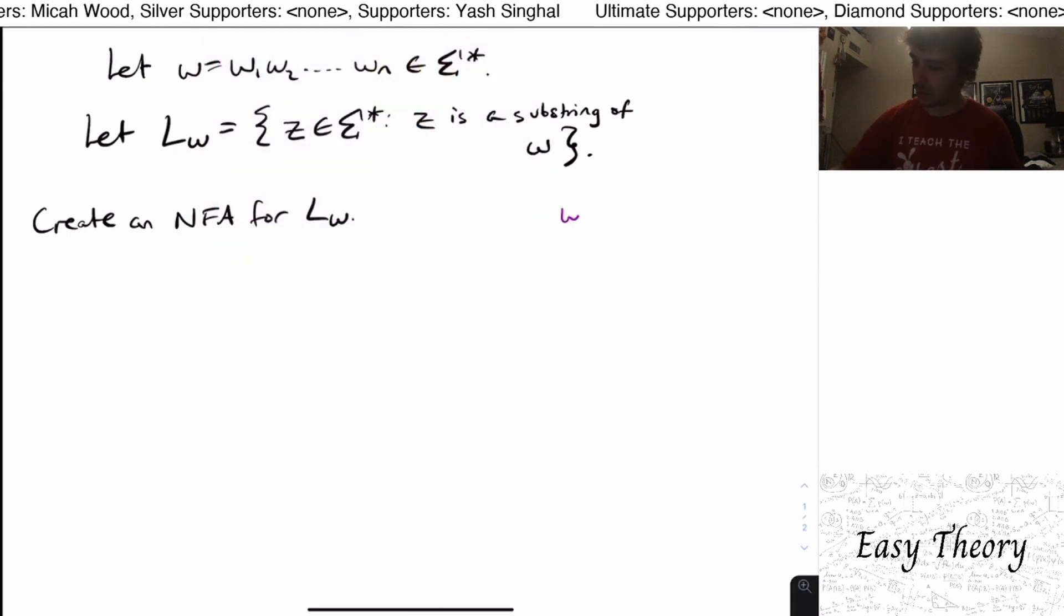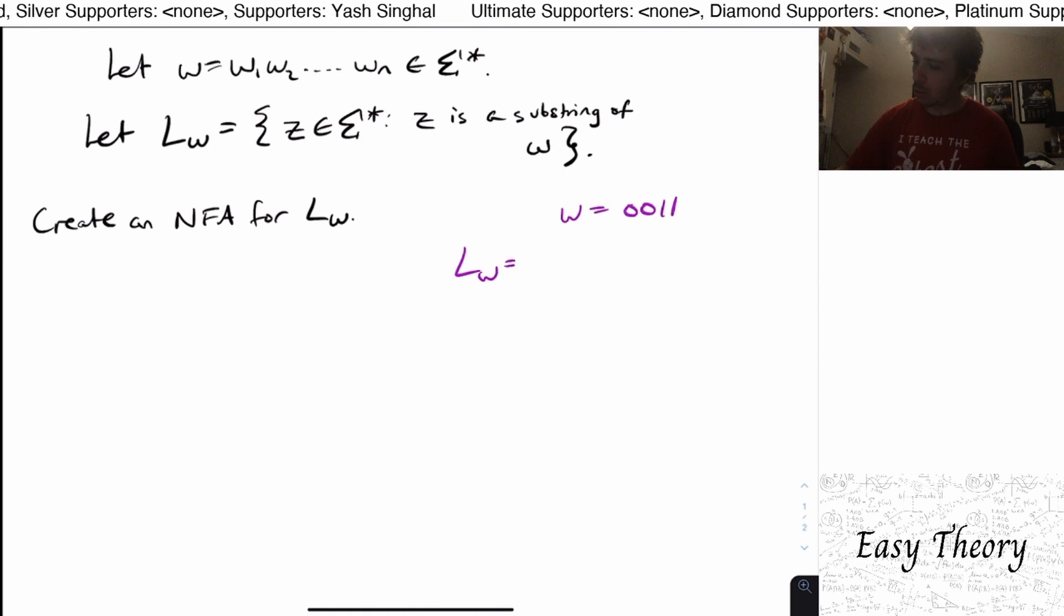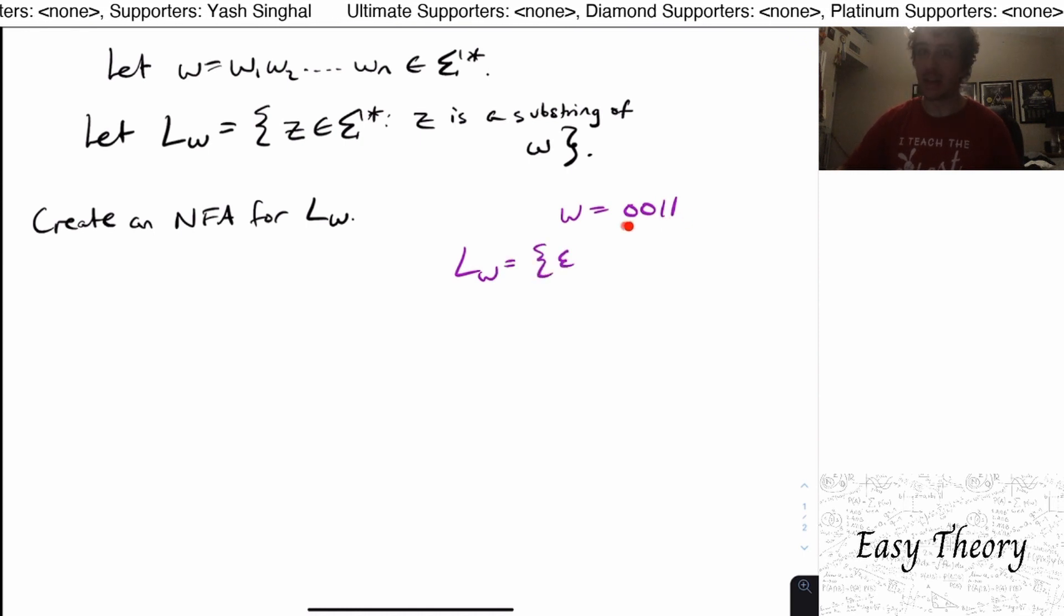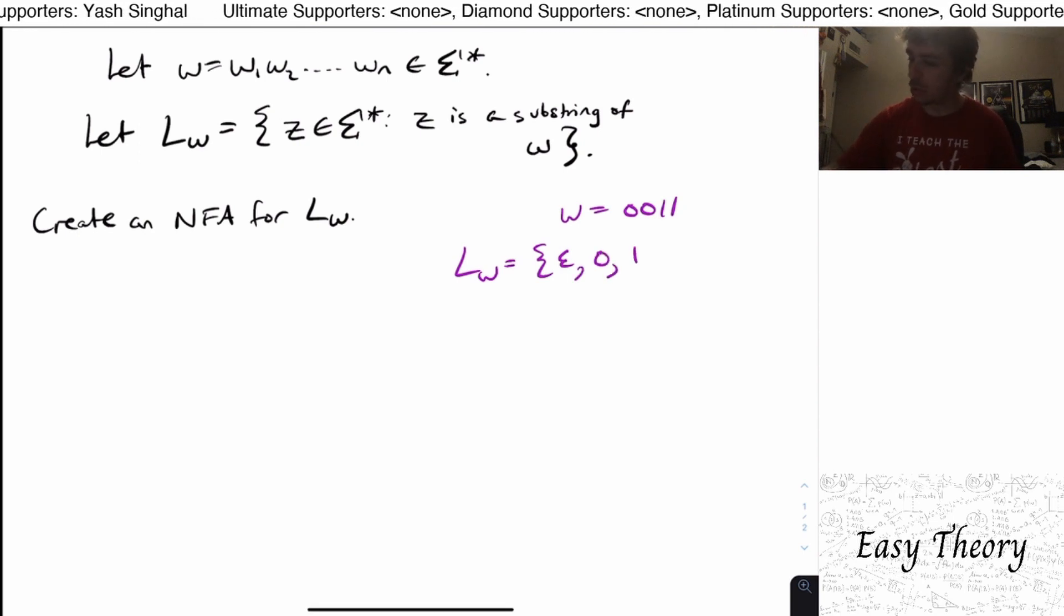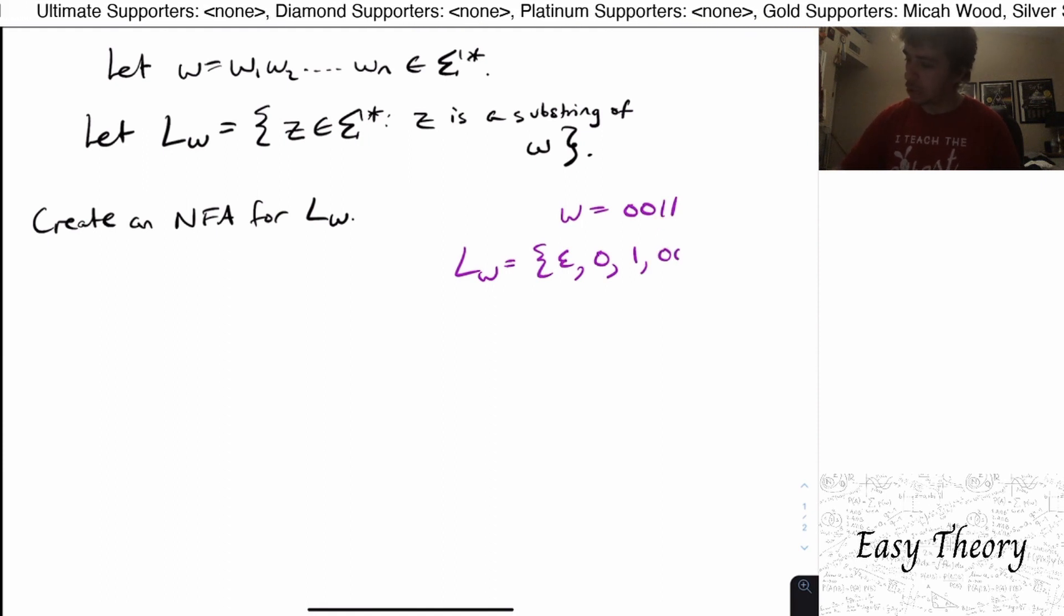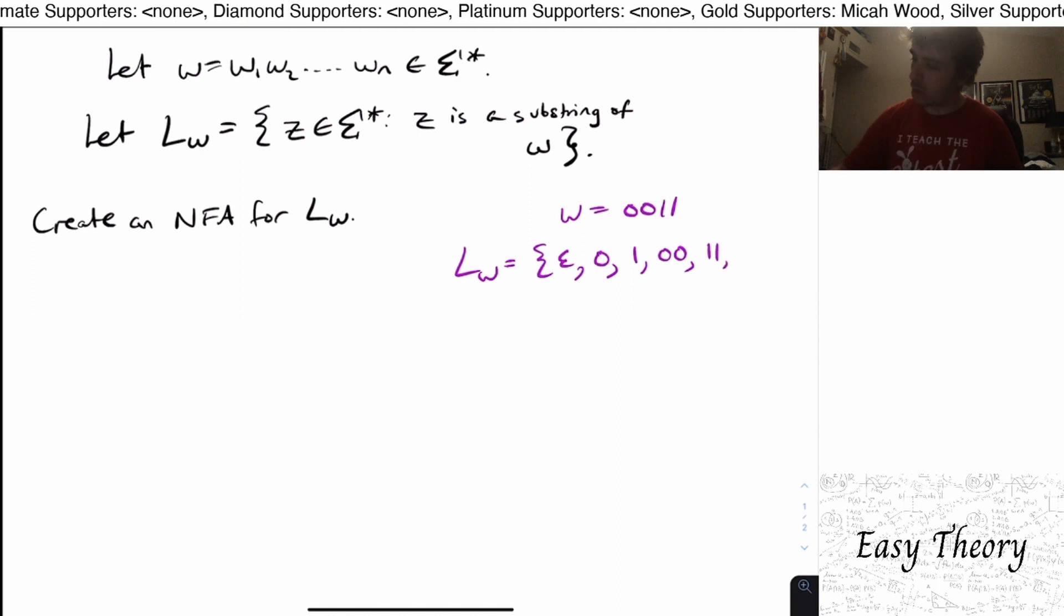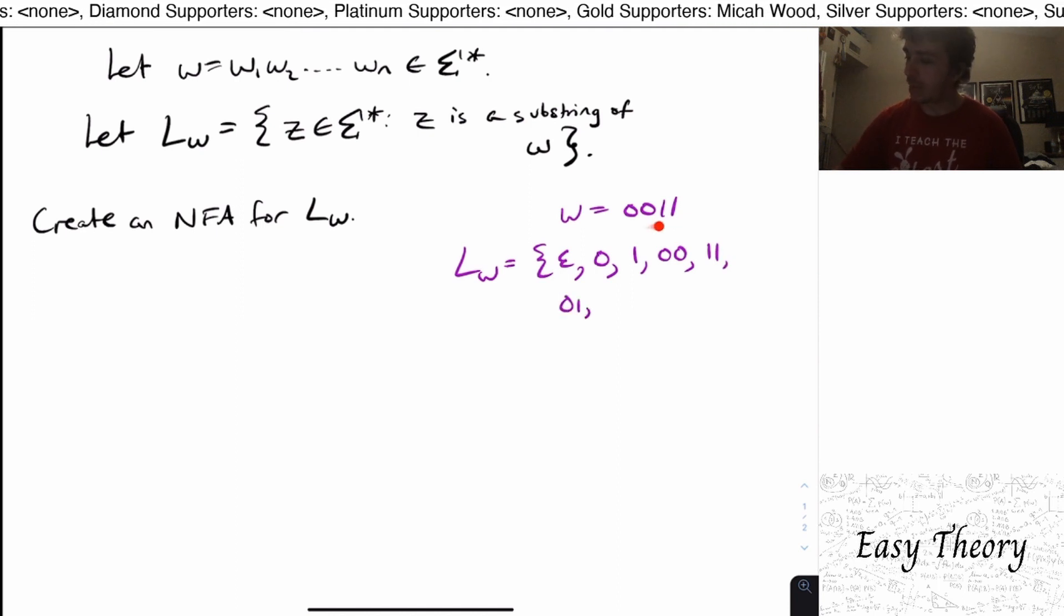So for example, if w is 0011, then L sub w is going to have the empty string in it because I can just pick nothing of this string as a substring. I could pick just a single zero or a single one because a single zero or a single one are substrings. I could pick 00, I could pick 11, I could pick 01. Now all of those are substrings of this string.